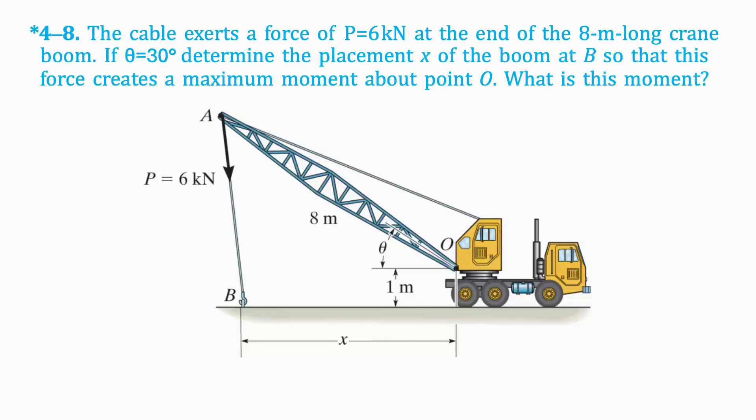Welcome back to QuickStatix Answers. Today's question is, the cable exerts a force of 6 kN at the end of the 8m long crane boom. Determine the placement X of the boom at B so that this force creates a maximum moment about point O. What is this moment?